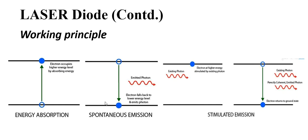Photons are emitted through spontaneous emission. The electron reaches a lower energy state from the higher energy state — when it falls back, it emits some photons. While rising to the higher energy level, it absorbed some energy, so it must release that energy in the form of photons. This is spontaneous emission: voltage is applied, energy is absorbed, electrons stay in the higher energy state for the recombination time, then go to the lower energy state emitting photons, and then recombination takes place.